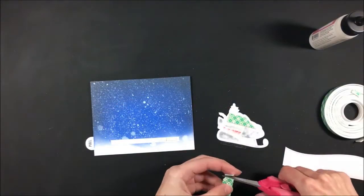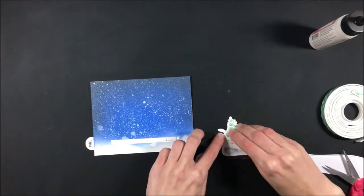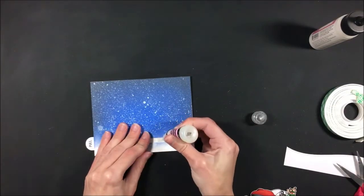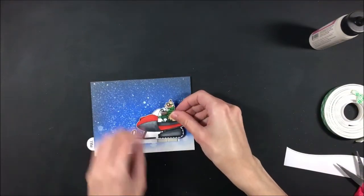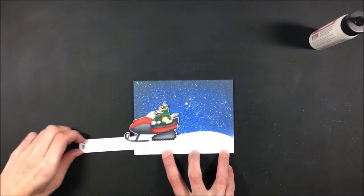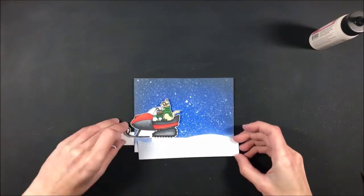I peeled off the backing of my foam tape and realized I forgot to pop up the top of this. I generally like to do this just so everything is laying with the same dimension because if the bottom is popped up and the top isn't, it might kind of want to lean back against the card. Then I just used some glossy accents on top of my foam tape to make sure that stuck down really well.